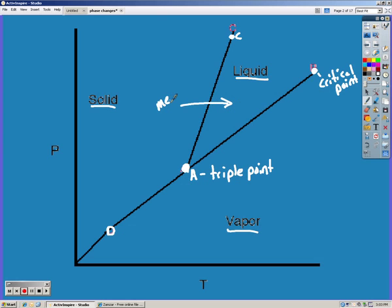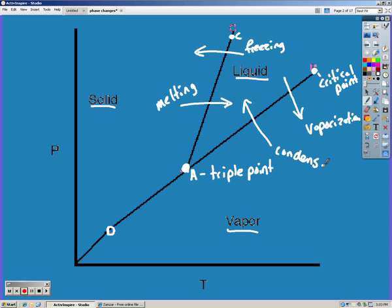Make sure you know where all of your phase changes occur. Solid to liquid is melting, so if we're going that way it's melting. The opposite of that would be freezing. Liquid to vapor is vaporization, while the opposite is condensation. Solid to vapor is sublimation, and vapor to solid is deposition.